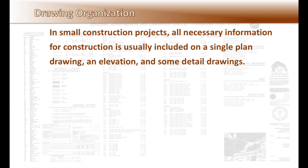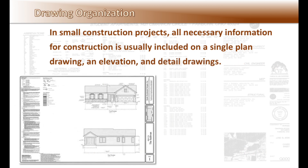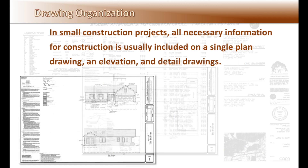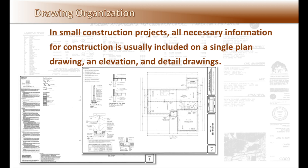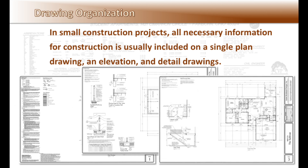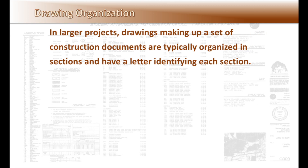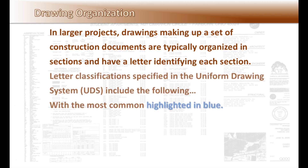On small construction projects, all necessary information for the construction is usually included on a single plan drawing, elevations, and detail drawings. On large projects, drawings that make up a set of construction documents are typically organized in sections and have a letter identification for each section. Letter classifications specified in the uniform drawing system include the following.